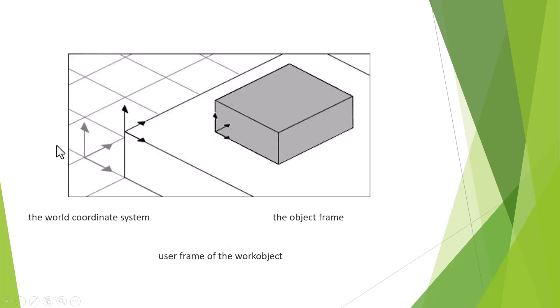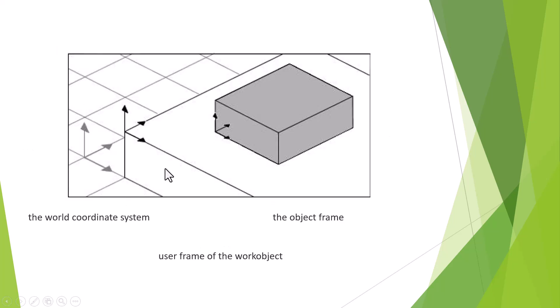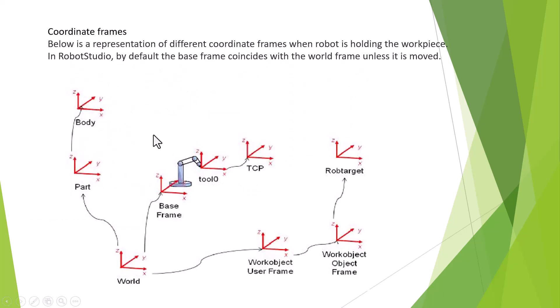Look like this. This is called world coordinate system. This is called object frame coordinate system. All the coordinate systems are hierarchy from the world coordinate system. The order is to use the right-hand rule to define the coordinate system.